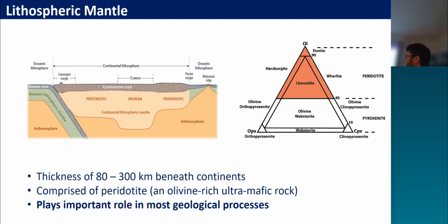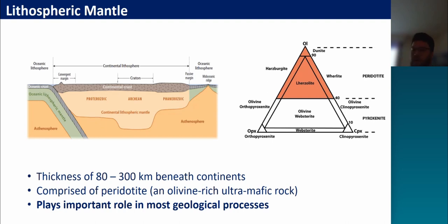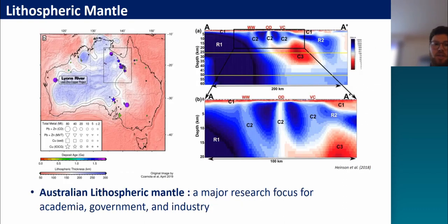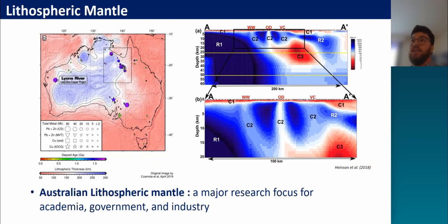Most people here will be familiar with the lithospheric mantle. It's the part of Earth's rigid outer shell that occurs with a thickness of about 80 to 300 kilometres beneath continents. The lithospheric mantle is comprised predominantly of a rock called peridotite, an ultramafic rock rich in olivine, as well as variable other minerals including orthopyroxene, clinopyroxene, garnet and spinel depending on the pressure. The lithospheric mantle plays a really important role in a number of processes, including climate control from subduction and storage of carbon-rich sediments. A lot of the metals we mine at the surface start off in the lithospheric mantle, and it is only through melting and tectonic processes that these are transported and concentrated at the surface to form ore deposits.